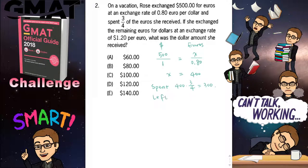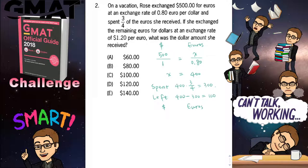There is one-fourth left, or you could just say 400 minus 300, so 100 euros remaining. She exchanged the remaining 100 euros back for dollars. So again, you have a proportion. I'm going to use a different variable and set up the proportion for this second exchange.